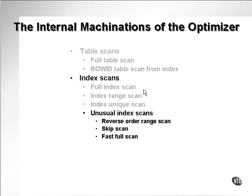A reverse order range scan simply scans the index in reverse order — not a descending key scan, but rather a scan of a reverse key index. A skip scan allows you to skip prefix columns in composite keys; where a composite key is indexed on three columns, a skip scan can read the second and third columns in the index and ignore the first. A fast full index scan reads the index physically from disk disregarding the order of the index, and is quite often a lot faster than a standard full index scan when the entire index is read.